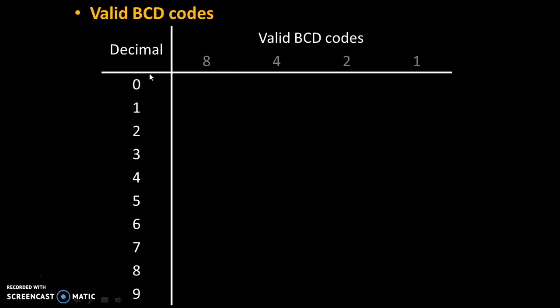So, valid BCD codes — there are total 10 decimal numbers from 0 to 9. Therefore, there are total 10 valid BCD numbers from 0 to 9. Now we will convert these decimal numbers into binary form to get binary coded decimal numbers.